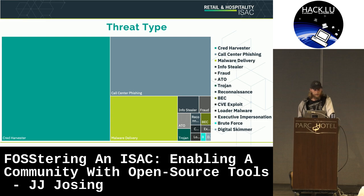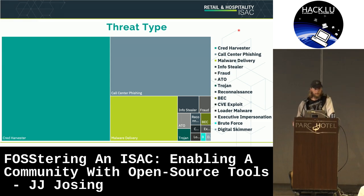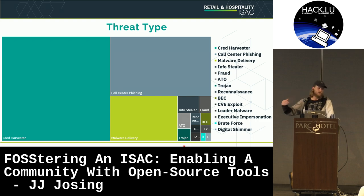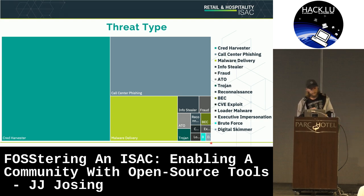Our threat type breakdown shows that nearly 50% of intel over the last year has been credential harvester intel. Almost a quarter has been call center phishing or callback malware — an extremely hot trend right now, including Google Groups phishing and Geek Squad scams. The last significant chunk is malware delivery — initial access intel being shared that wasn't specifically attributed to a certain malware family. As members get more granular in what they're sharing, we tag it appropriately: info stealer, loader, and so on.